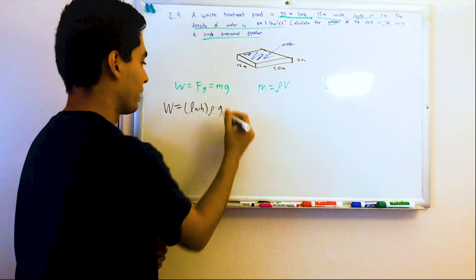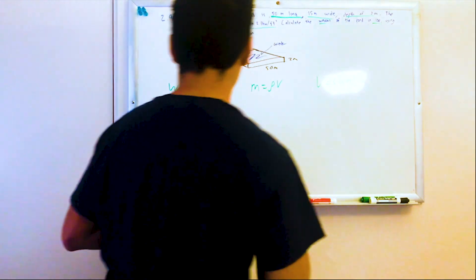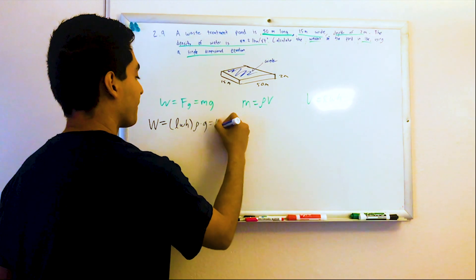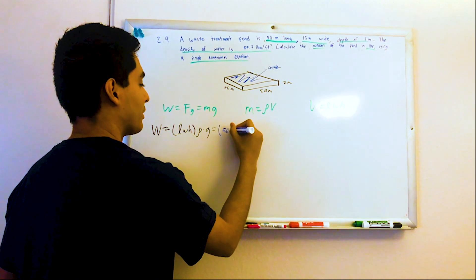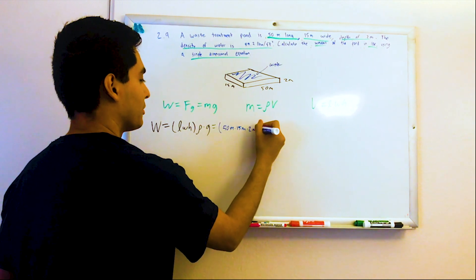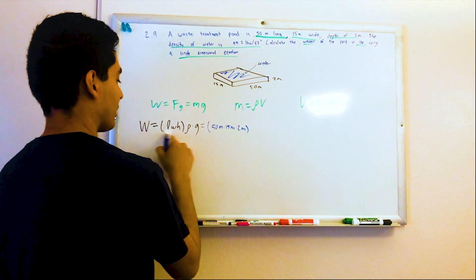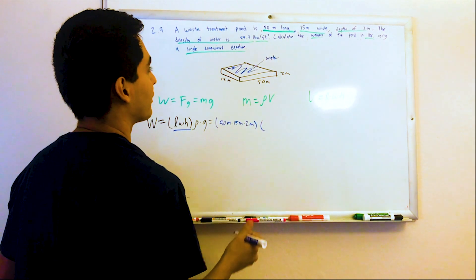So the weight is going to be the mass, so length times width times height times the density times the gravitational constant. All right, so if we plug these guys in, length times width times height is 50 meters times 15 meters times 2 meters. So that's this, and then the density is given as 85.3 pound mass per cubic feet.